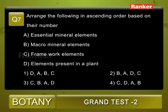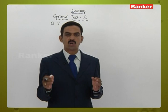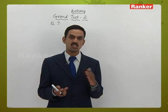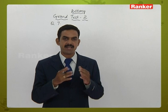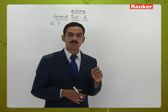Question number seven: arrange the following in ascending order based on their number. A — essential mineral elements, B — macro mineral elements, C — framework elements, D — elements present in a plant. Options: one - D,A,B,C; two - B,A,D,C; three - C,B,A,D; four - C,D,A,B. This is related to mineral nutrition and the role of minerals in plant growth and development.